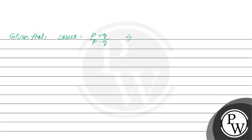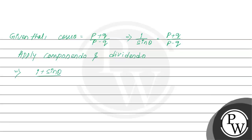We can write it as cosec theta equals 1 by sin theta, which equals p plus q divided by p minus q. Let us apply componendo and dividendo. That implies: 1 plus sin theta divided by 1 minus sin theta equals p plus q plus p minus q, divided by p plus q minus p plus q.